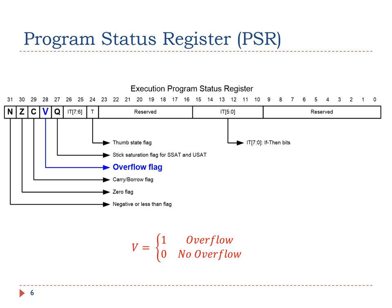This shows the content of the Program Status Register. The V bit represents the overflow flag. If V is 1, overflow has happened. If V is 0, no overflow has been generated.